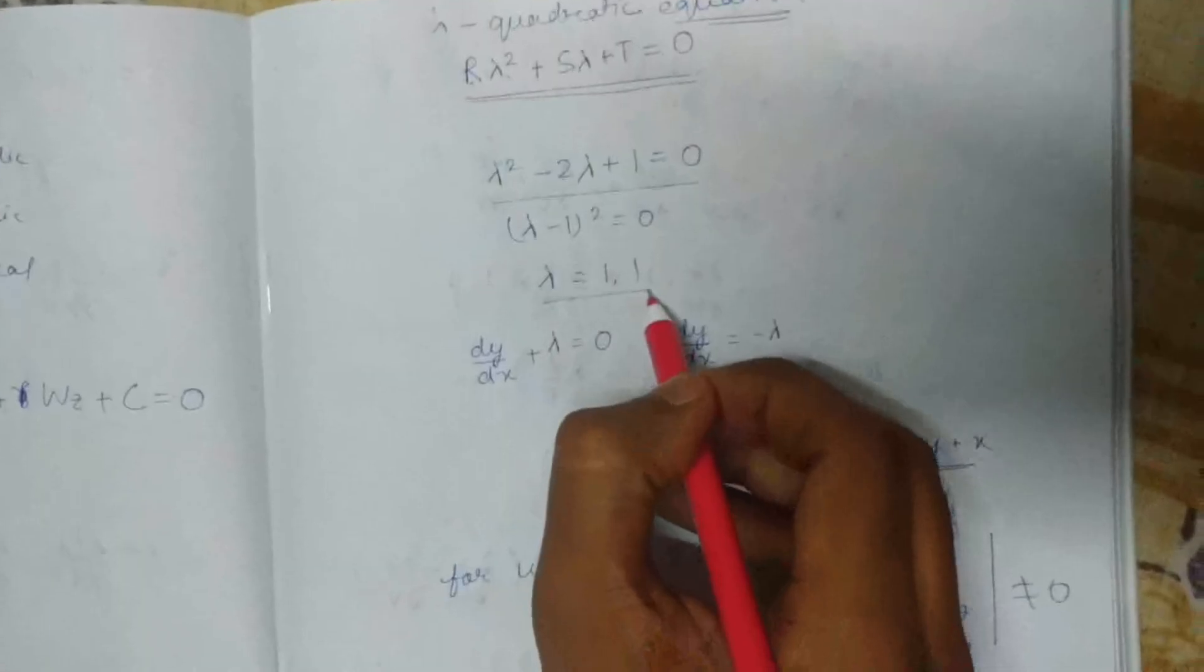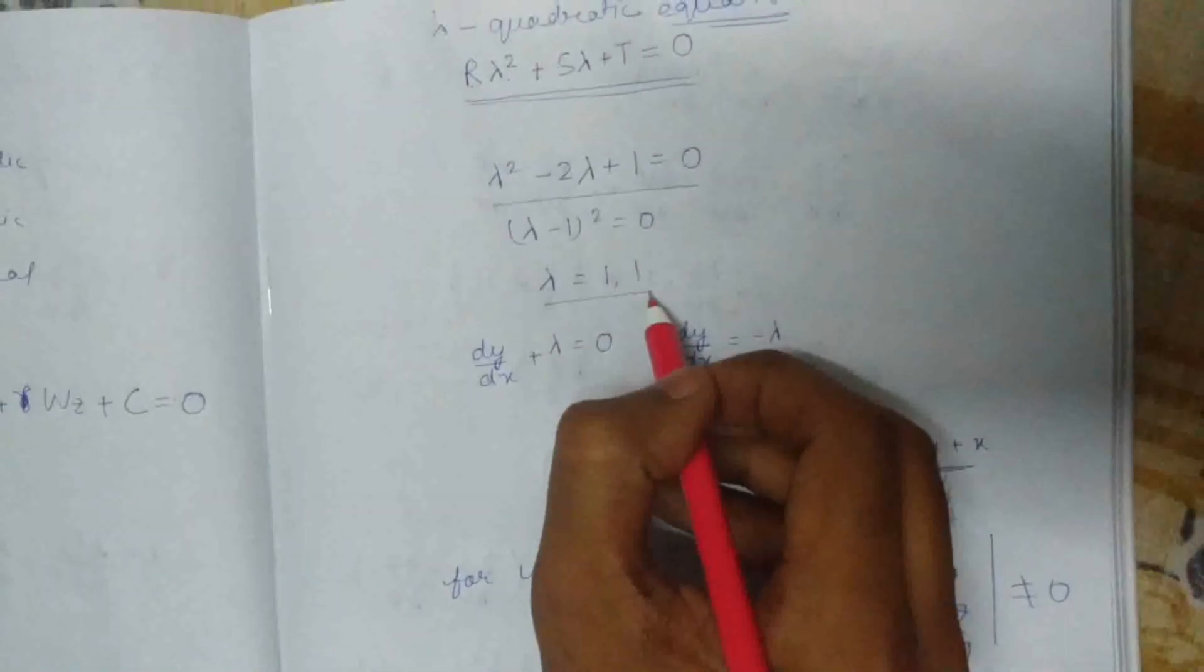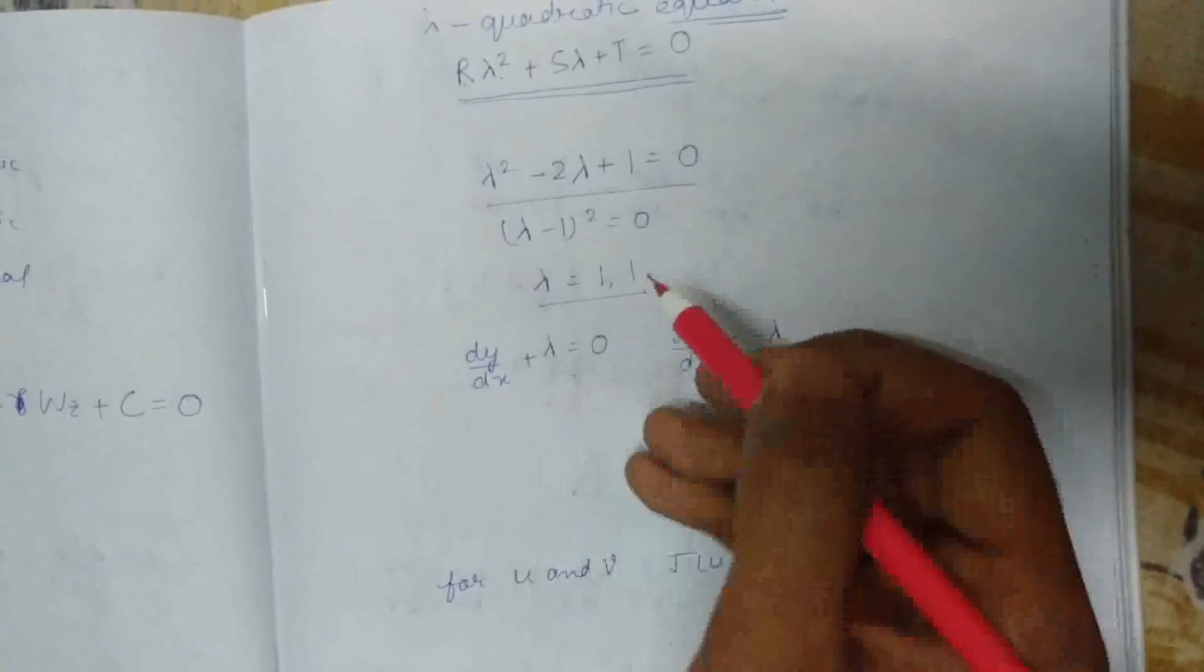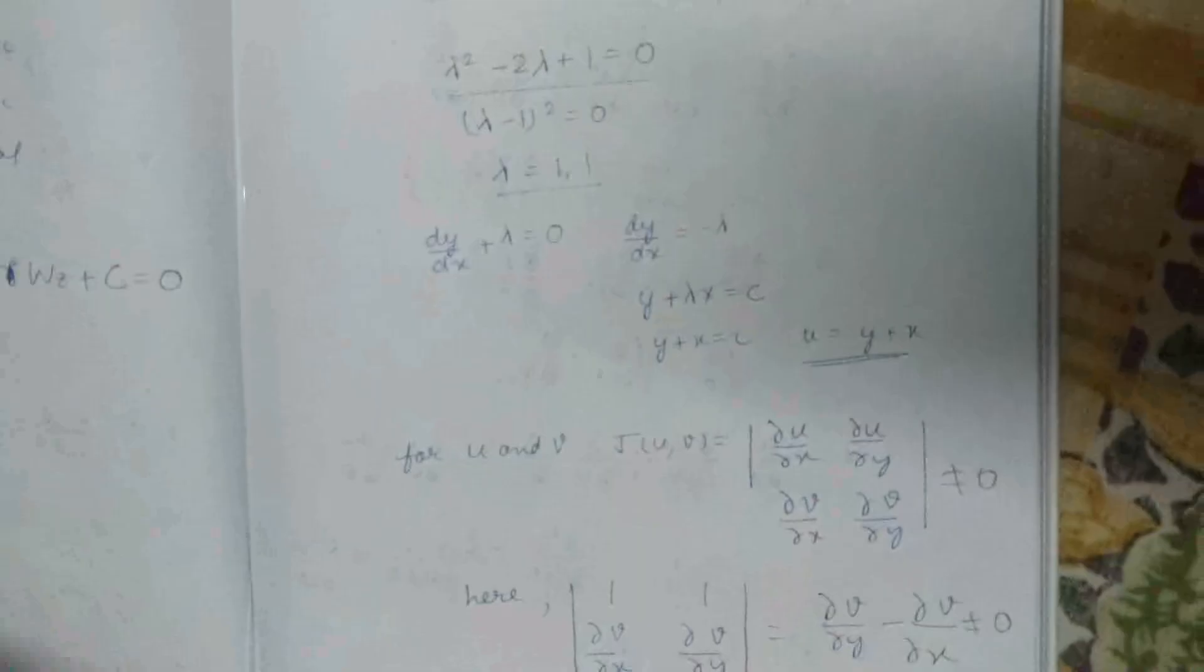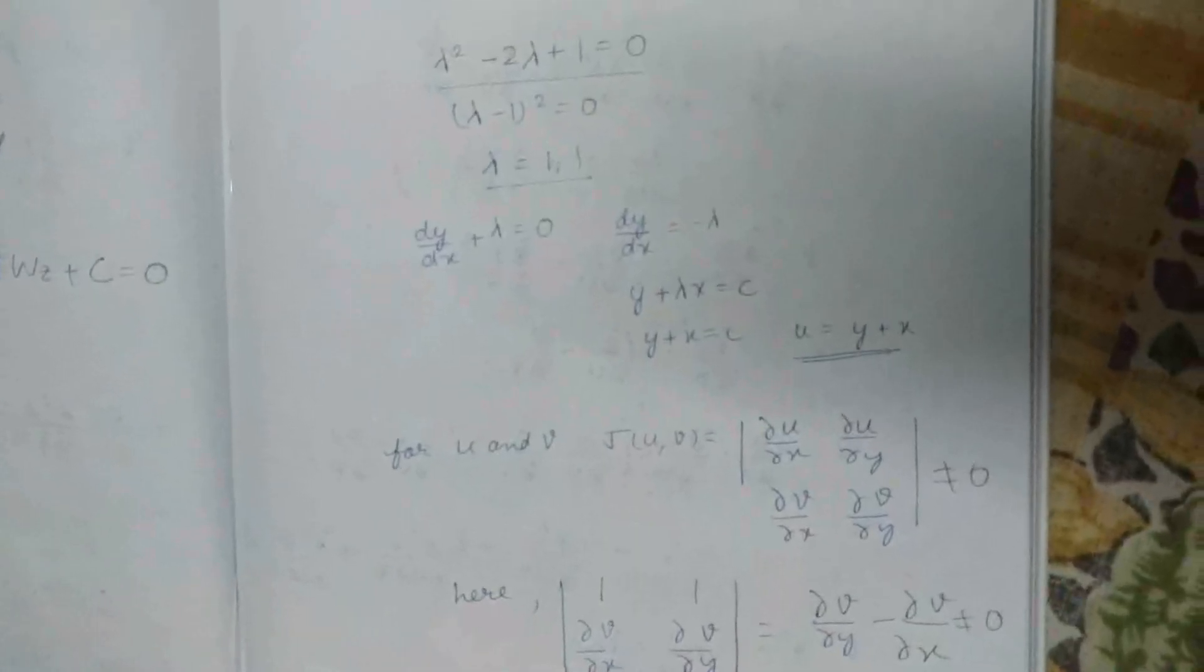We solve this equation and get the lambda value. Lambda has a single value, not two values which we generally get. This concept is going to help you understand the total concept of canonical PDE in a better way.